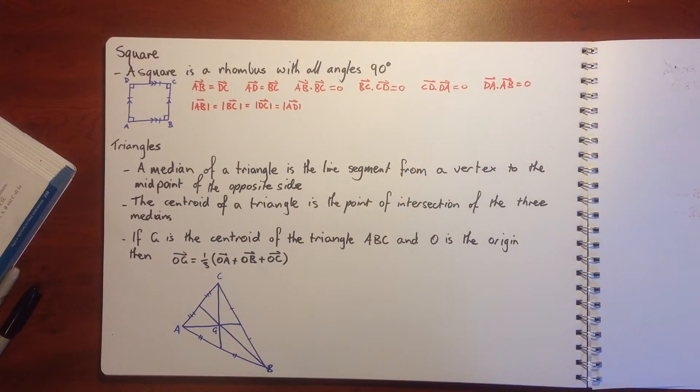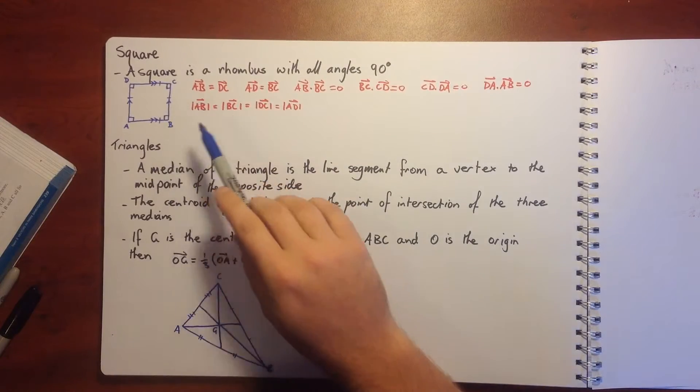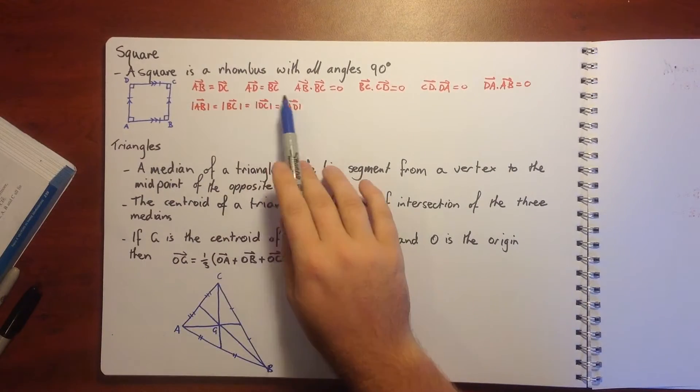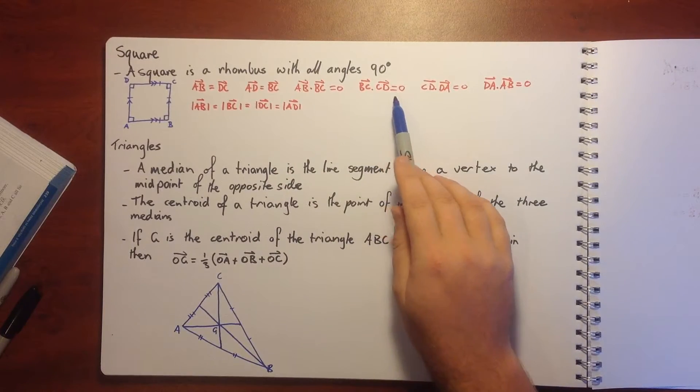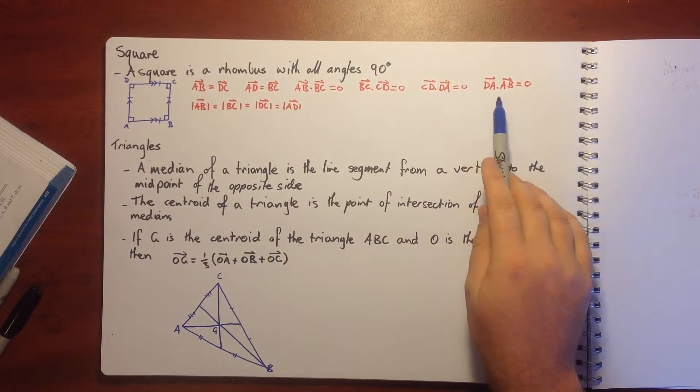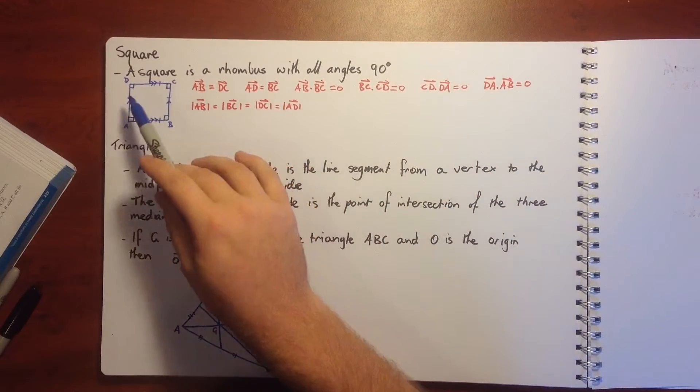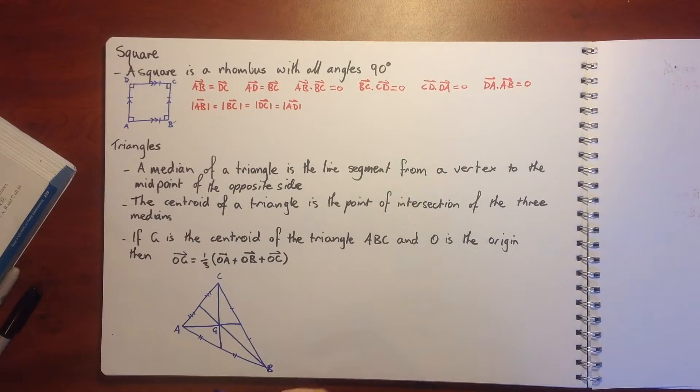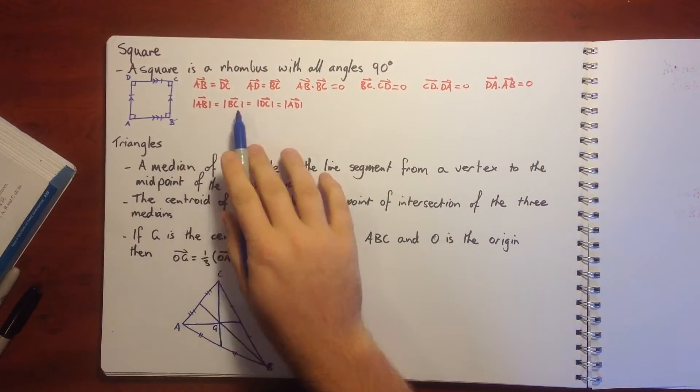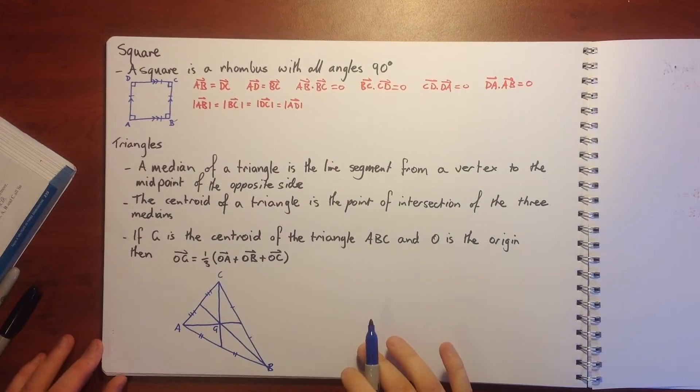A square is a rhombus with all angles 90 degrees, so all our sides are equal and they're all perpendicular. AB equals DC, AD equals BC. AB dot BC equals zero, BC dot CD equals zero, CD dot DA equals zero, and DA dot AB equals zero. That's basically each pair of our sides that have a corner in common are perpendicular to each other, so the dot product equals zero. And all our magnitudes of our side lengths are the same as well.